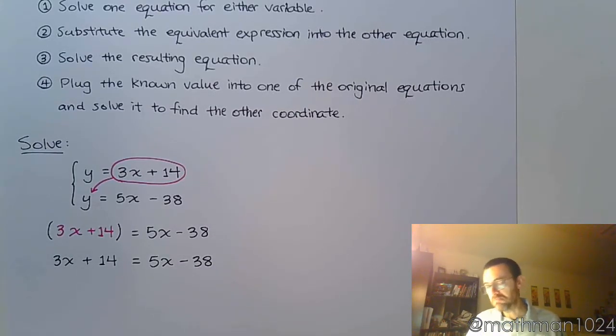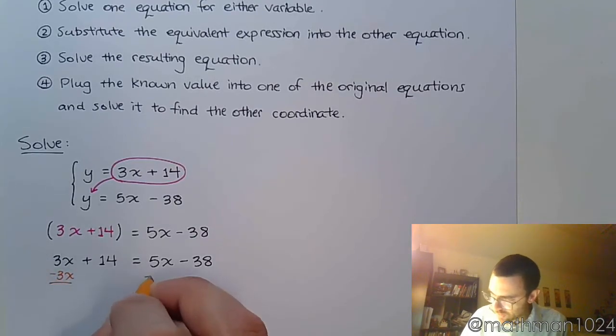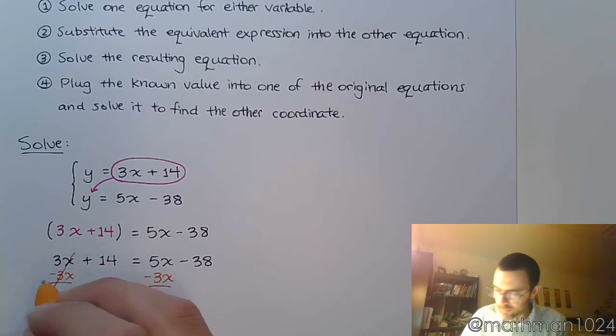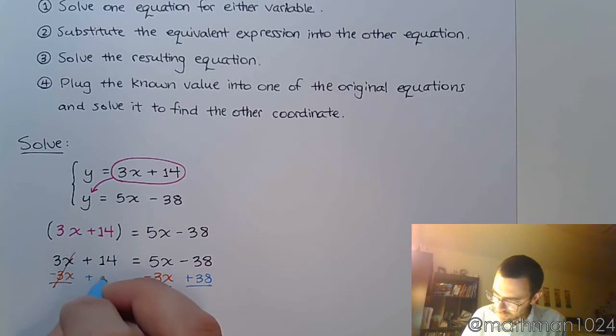Step 3 says to solve this equation. Well, that should be simple enough. I just need to move the variables to one side. I'm going to move my x's over here to the right by subtracting 3x on both sides. And I'm going to move my constant to the other side.